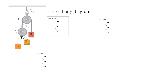For the FBD of pulley A, it pulls two blocks, which are blocks 1 and 2, and they have the same tension. In the shown figure, pulley A is being pulled by pulley B, which is tension B. ΣFx is equal to 0, and ΣFy is equal to tension B minus 2 tension A.